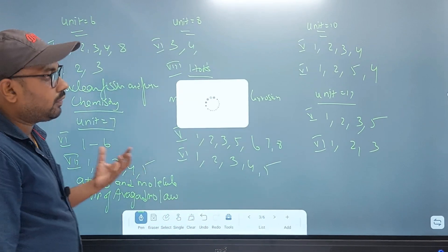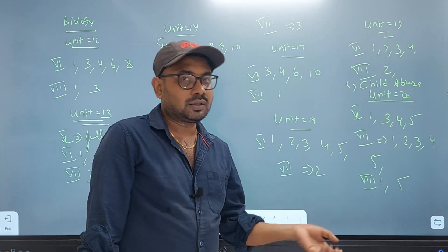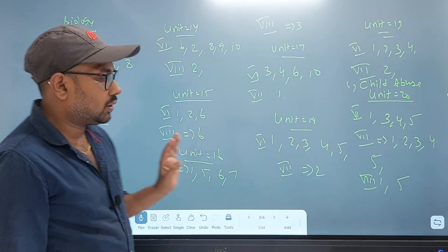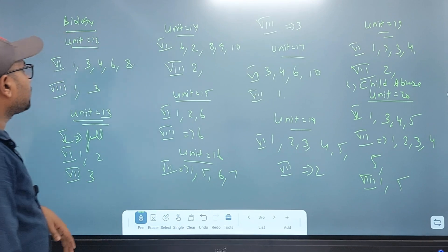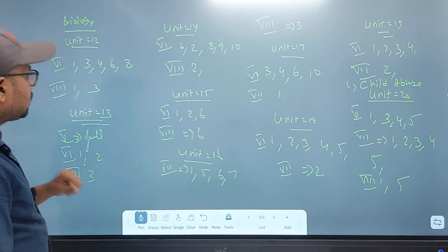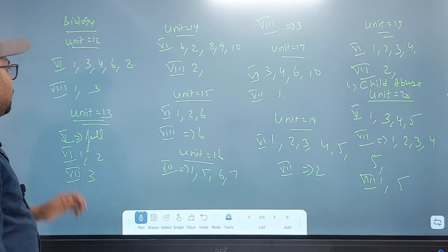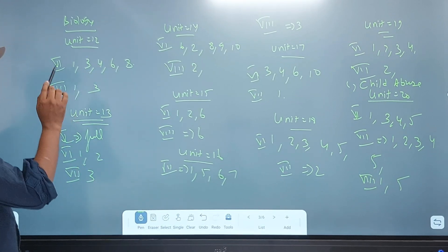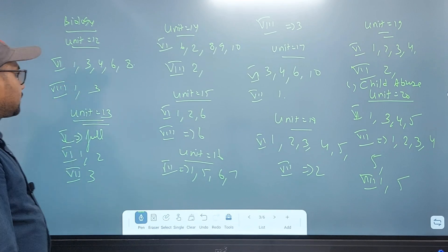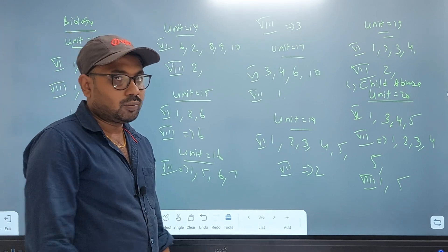Chemistry: 15, 15, 15 — 4 mark. Biology: 1, 2, 3, 5 — 1, 3, 4, 6, 8, 1 — 3, 4, 6, 8 — 2 mark.